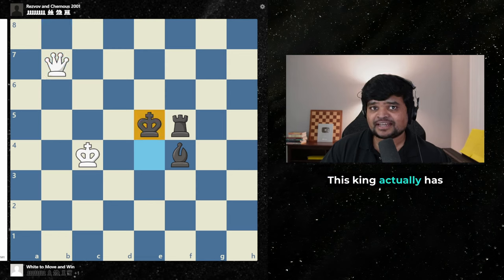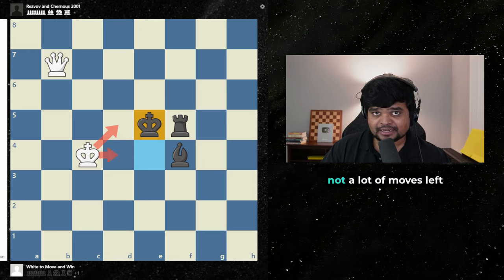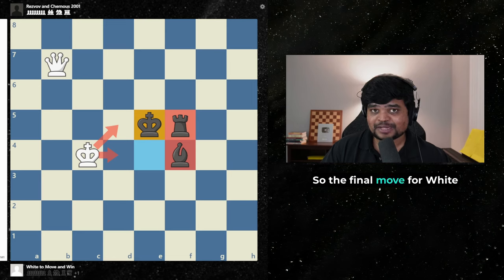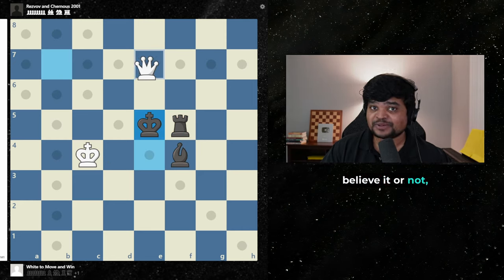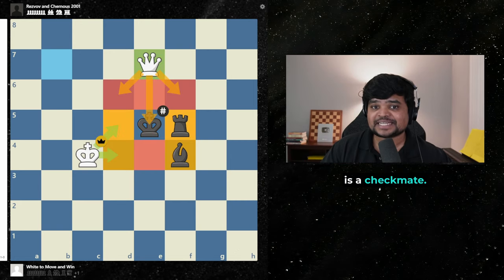This king actually has not a lot of moves left if you look closely. So the final move for white is the elegant queen e7. And this move, believe it or not, is a checkmate.